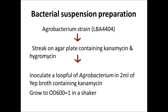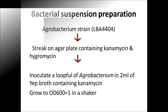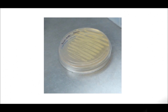Bacterial suspension preparation: Agrobacterium strain LBA 4404 harboring pKMBIA 2301 plasmid is streaked on an agar plate containing kanamycin and hygromycin. Then a loopful of this strain is inoculated in 2 ml of YEP broth containing kanamycin.